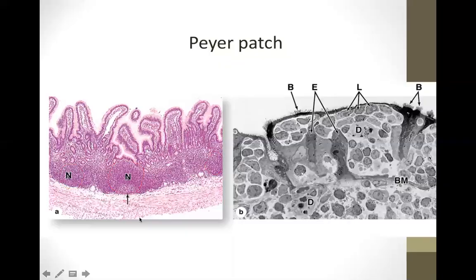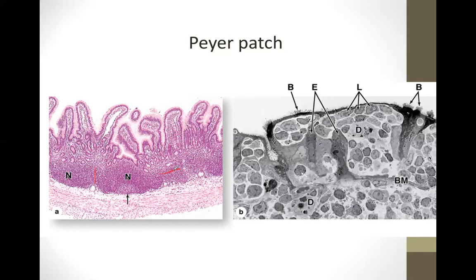Dense lymphatic tissue can also be seen in between nodular lymphatic tissue — for example, in the areas between Peyer's patches. The one in between the nodular patches is your dense lymphoid tissue. So in the vermiform appendix and in the ileum, the lamina propria contains both nodular lymphoid tissue and dense lymphoid tissue.